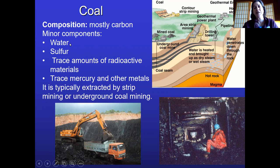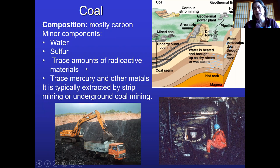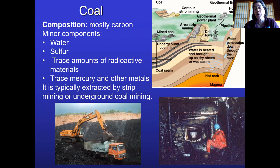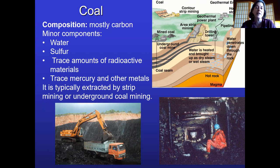Coal contains moisture content, which makes it harder to combust. It also has sulfur, which can lead to acid rain. There are trace amounts of radioactive minerals because it's a rock formed in the earth. And then there are trace metals — the biggest concern, because it occurs in the largest amount and is very volatile, is mercury. When you burn coal, the mercury naturally contained in it vaporizes and goes out into the atmosphere.